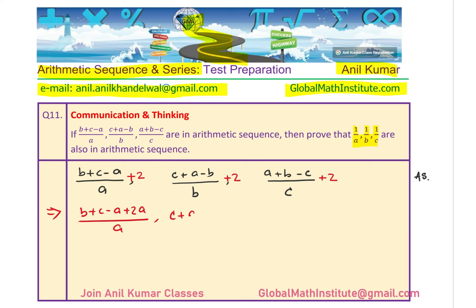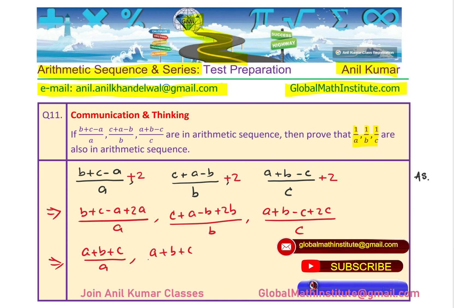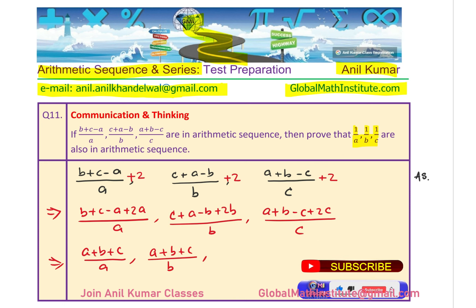The second term becomes (c + a − b + 2b)/b. And the third term will be (a + b − c + 2c)/c. That gives us three terms: (a + b + c)/a, (a + b + c)/b, and (a + b + c)/c.